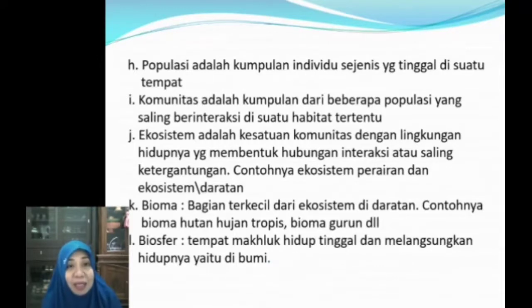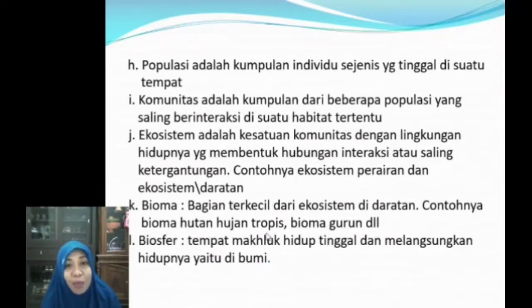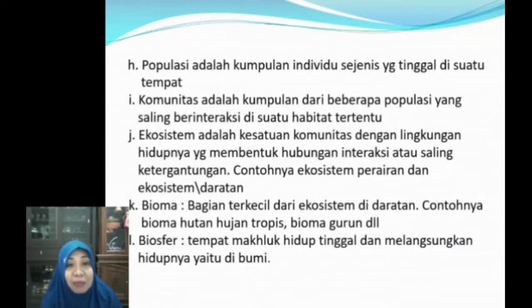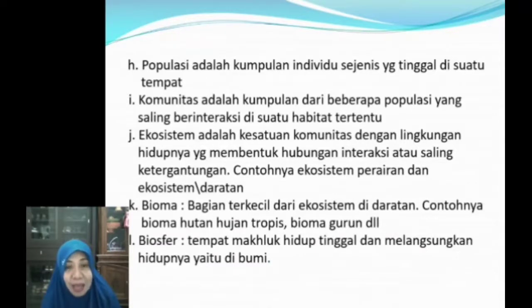Dari ekosistem kita pindah ke tingkatan berikutnya yaitu bioma. Bioma adalah bagian terkecil dari ekosistem di daratan, contohnya bioma hutan hujan tropis, bioma gurun, bioma pasir, dan lain-lain. Tingkatan berikutnya adalah biosfer. Biosfer adalah tempat makhluk hidup tinggal dan melangsungkan hidupnya, yaitu di bumi. Seluruh permukaan bumi ini dapat kita katakan adalah biosfer. Itulah tingkatan-tingkatan organisasi kehidupan di dalam biologi.